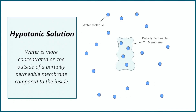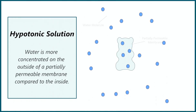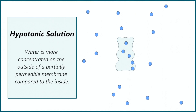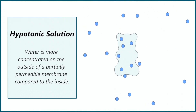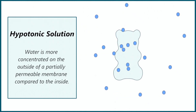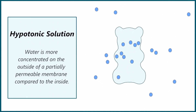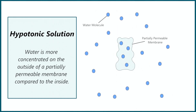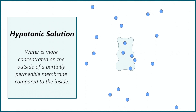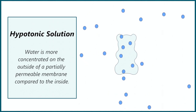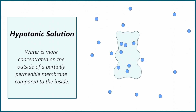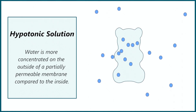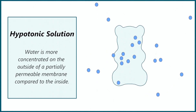Why did the gummy bears grow and shrink? The first gummy bear was in just water. This meant water was more concentrated on the outside of the gummy bear — it was in a hypotonic solution. Remember the gummy bear is mostly sugar and gelatin so has a low concentration of water. As a result the water molecules moved from a high concentration outside to the lower concentration inside, and therefore it swells up and expands just like a cell.